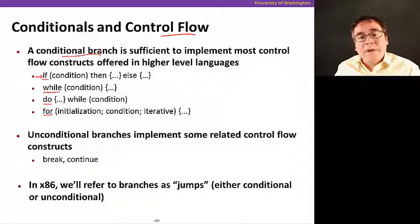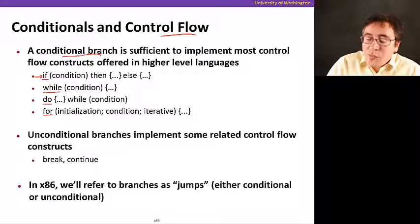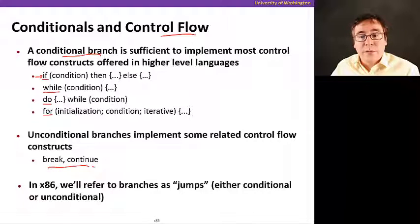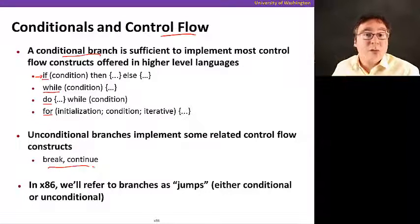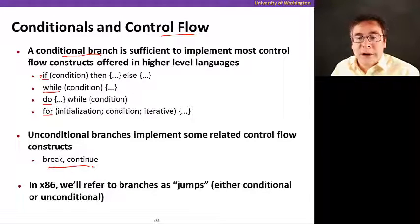Unconditional branches, which are branches that execute no matter what, regardless of the condition, are used to implement things like break and continue. Break breaks out of a loop and continue goes back to the beginning of the loop. Those are unconditional, they happen anyways. So we use unconditional branches for those.